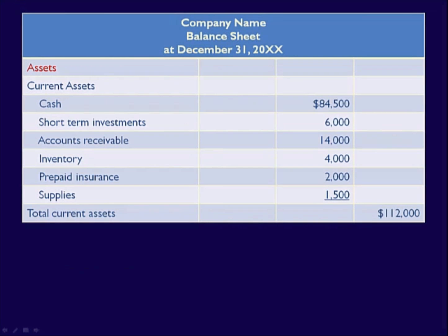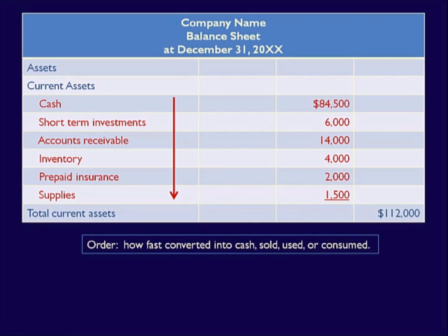Listed first on the Balance Sheet are the assets, with the heading 'Assets,' followed by a subheading 'Current Assets.' Notice that the assets are listed in order of liquidity — the faster the business can convert the assets into cash, sell, or use them, the higher they are on the list. For example, accounts receivable is listed before inventory because the business is likely to collect cash from customers before selling more inventory. Assets converted into cash are always listed before assets that will be used or consumed. Supplies and prepaid insurance are listed last, and their order relative to each other does not matter.